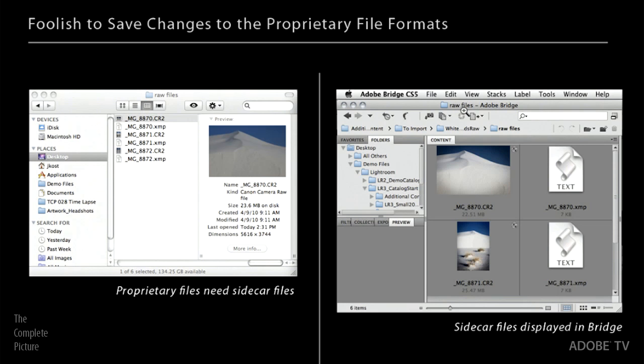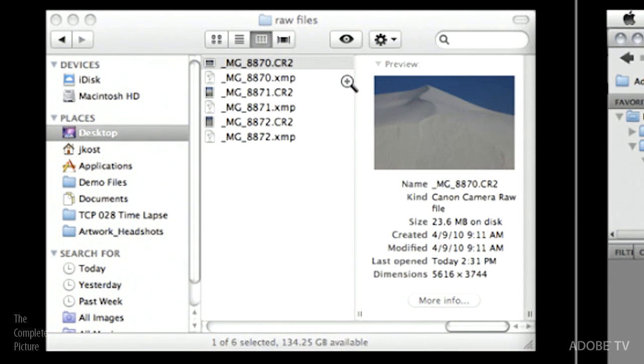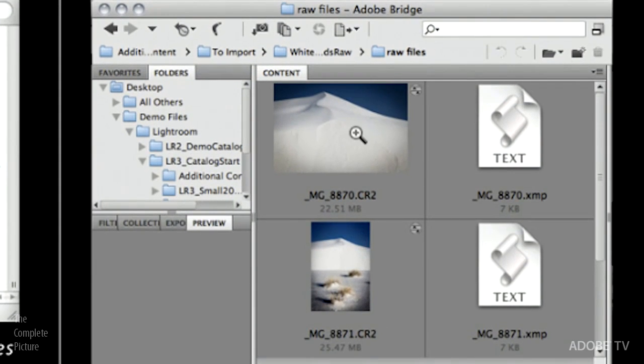So you can see in this example here that we don't actually write back to proprietary raw file formats. Instead, what we do is we create a secondary file called an XMP sidecar file. The XMP is just the file format. It's a standard file format. And the sidecar file is just kind of what we name it because it goes alongside the proprietary raw file format. So you can see here, for example, in the operating system, the CR2. That's the Canon's raw file format. And there's the XMP file. Or over here, we can see this is actually in Bridge that we're viewing this. And what I've done is I've gone into the View menu and I've asked Bridge to show me the hidden files. So we can see the CR2 file right here plus the XMP file.